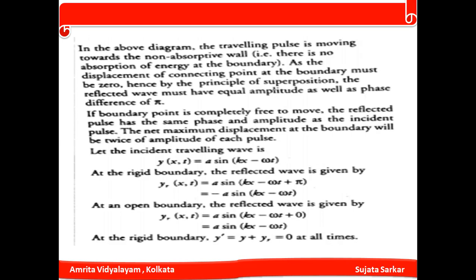When a pulse travels toward a non-absorptive rigid wall, the displacement at the connecting point at the boundary must be zero. By the principle of superposition, the reflected wave has equal amplitude but a phase difference of π. If the phase difference is π, the reflected pulses have the same amplitude as the incident pulse.